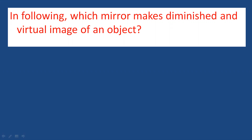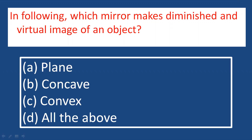Which mirror makes a diminished and virtual image of an object? We have a plain mirror as one option. A plain mirror forms an image the same size as the object — it does not form a diminished or enlarged image. So option A, the plain mirror, is wrong.